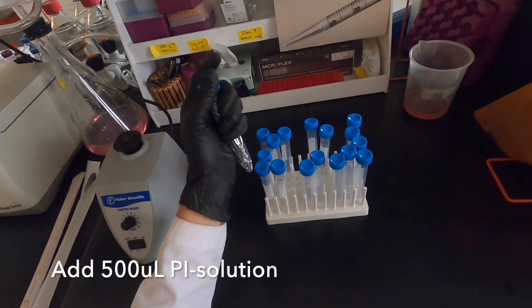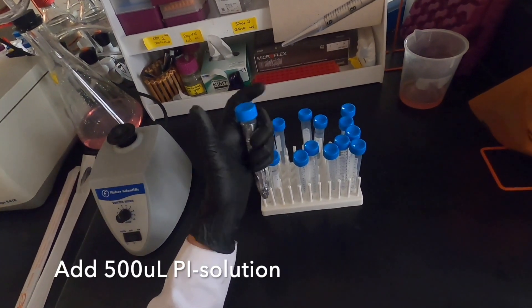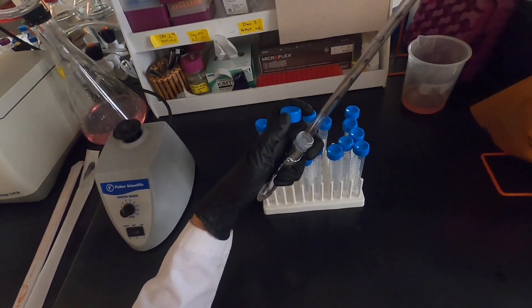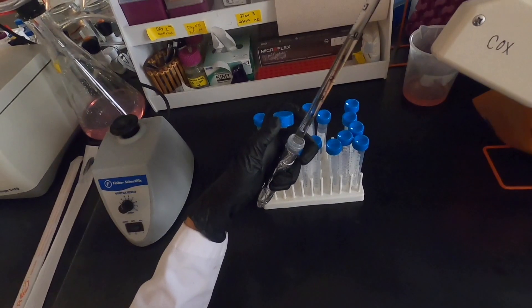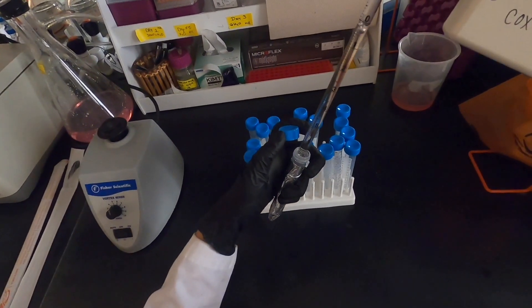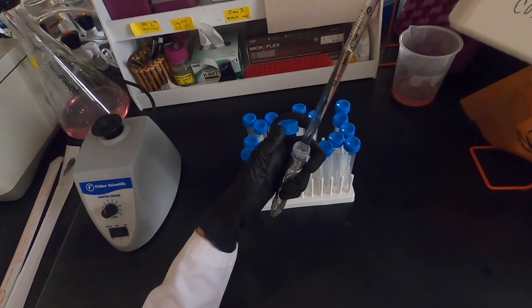Then we will add our PI solution. We will be resuspending each pellet in 500 microliters of the PI solution. The solution is stored, protected from light by wrapping it with aluminum foil. If you refer to your amino, you will see that the PI solution also contains RNase.